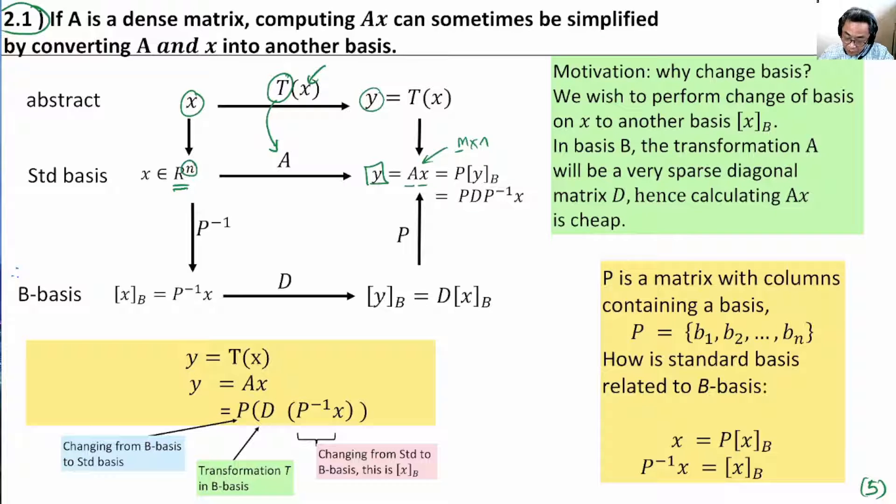In this view, transformation is simply matrix vector operation A times X. Now, we wish to consider the case where it is advantageous to convert X into another basis. Let's call this basis B. And A changes to another matrix called D. How it changes, we will discuss later.